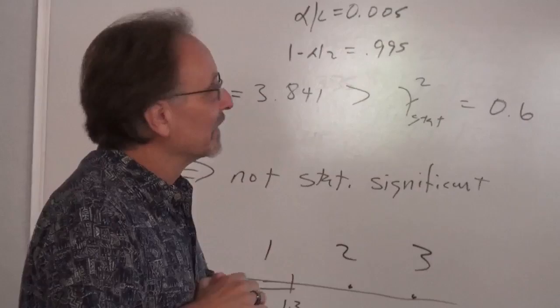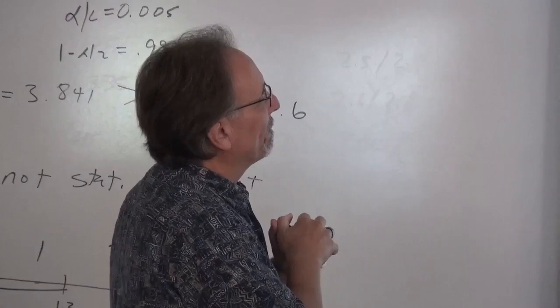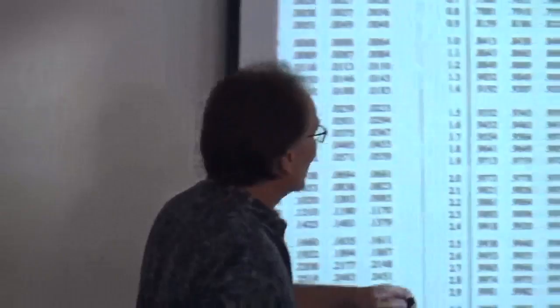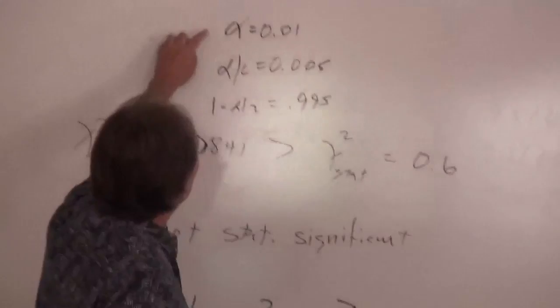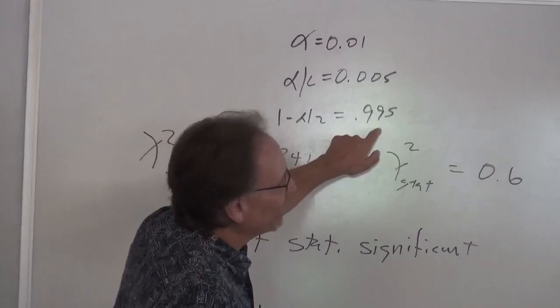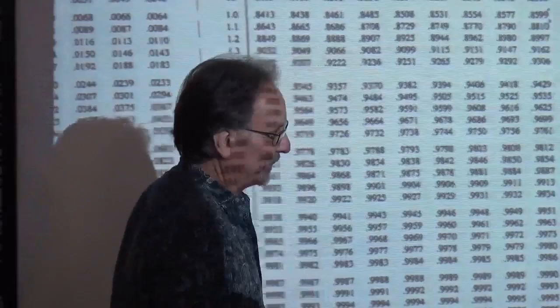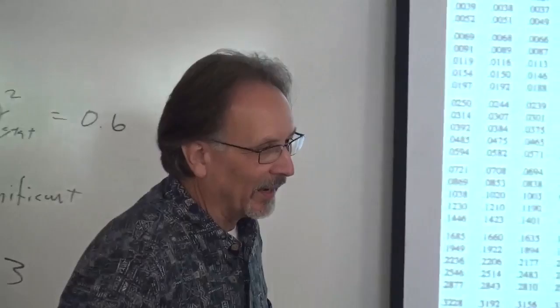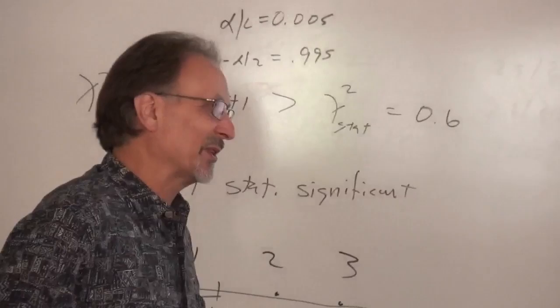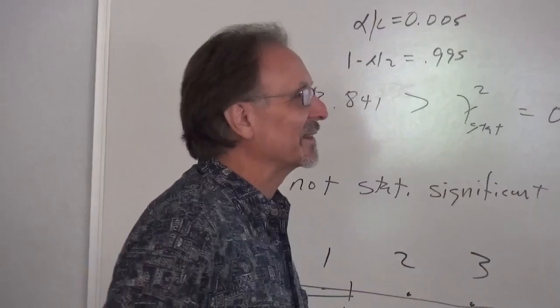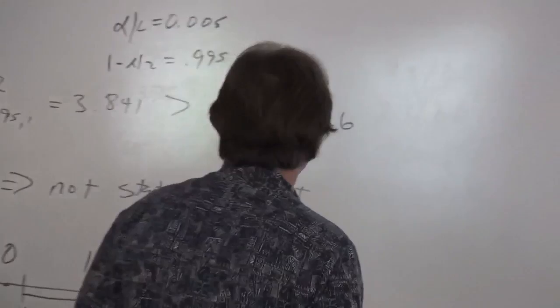Do we need to do the 1 minus alpha over 2 equation? Yes, you do — to figure out the 0.995. I said alpha is 0.01, alpha over 2 is 0.005, 1 minus alpha over 2 is 0.995. That's how I figured out where to go on the table. Confidence intervals are always two-sided, so you always do 1 minus alpha over 2.